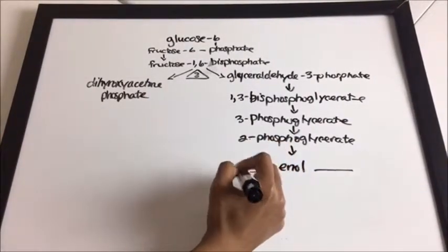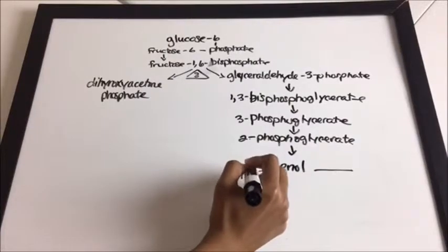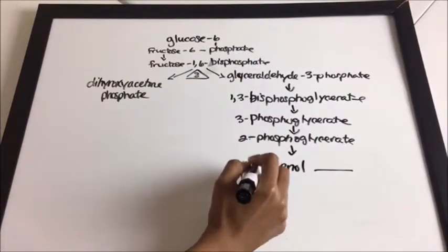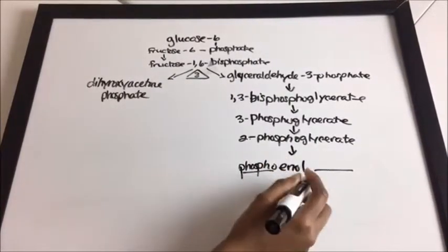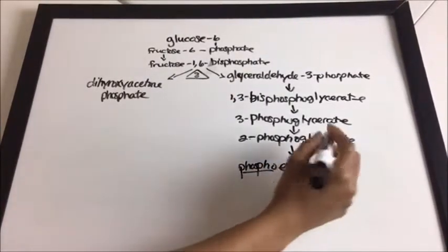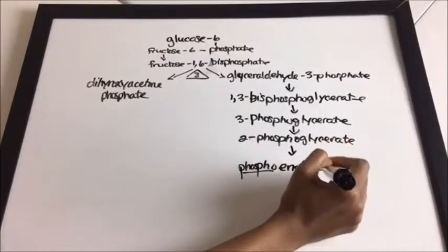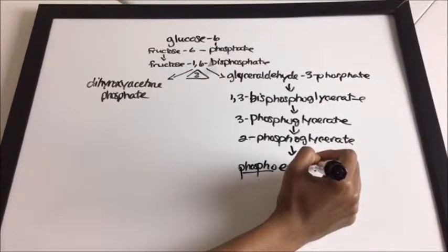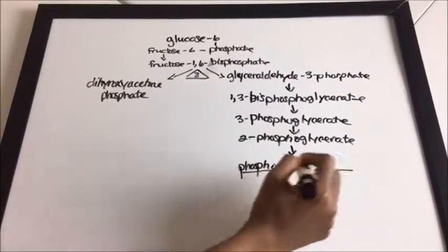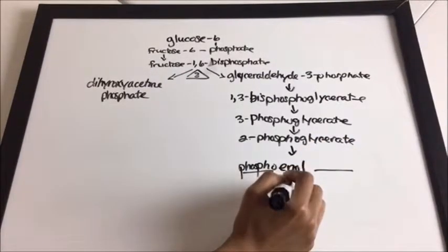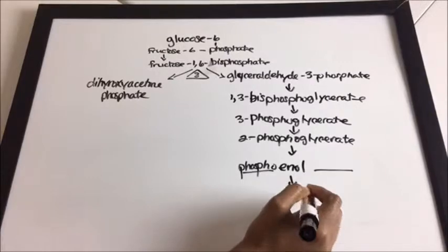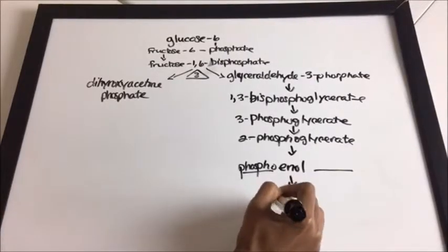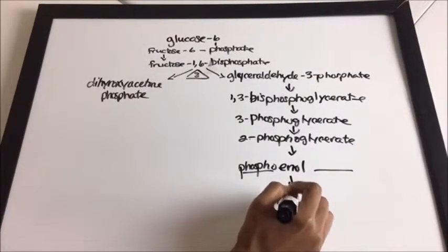We're going to bring down phospho — we already have the enol — and we're going to bring up pyruvate, because our next substrate is pyruvate.